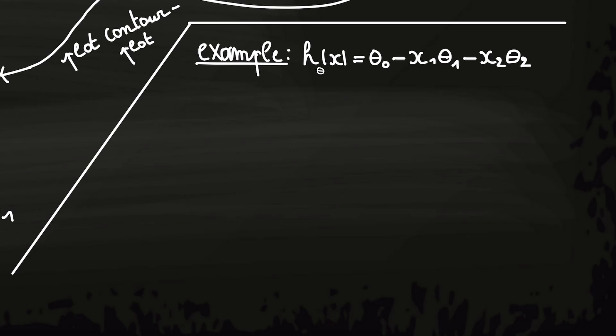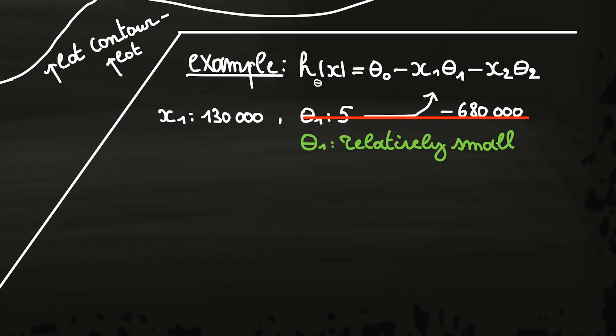This can be illustrated by following example. If we look how the real hypothesis of this example would look, the hypothesis will subtract some value for each additional mile the car has. So, if you assume that the car has a value of x1 equal to 130,000 and you would multiply it with a parameter theta1 that is equal to 5, you would subtract more than half a million dollars from the value of the car. That's way too much. So, it's easy to see that theta1 must be relatively small to be accurate.